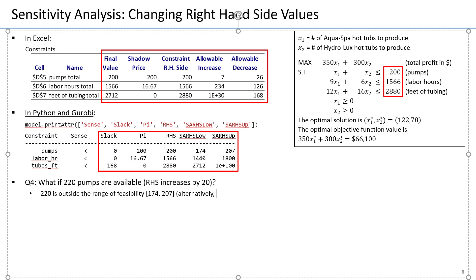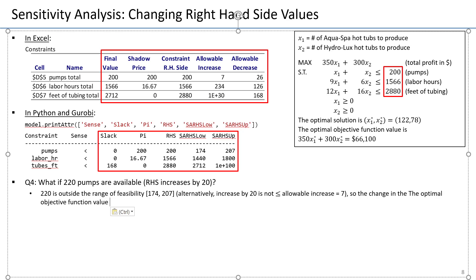Alternatively, an increase by 20 is not less than or equal to the allowable increase, which is equal to 7, as we see here in the sensitivity report from Excel. So what do we know? The change in the optimal objective function value cannot be determined exactly using the shadow price of the pump's constraint.